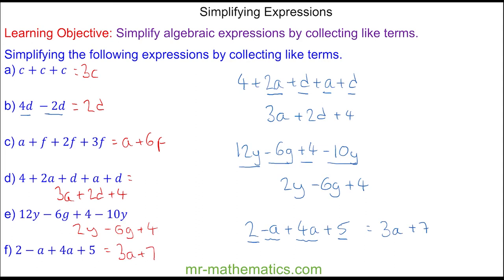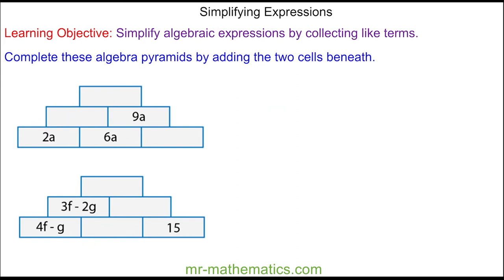Let's try two more questions. Here we have two algebra pyramids where the cell on top is made by adding the two beneath. Do you want to try and complete these pyramids yourself by pausing the video? We'll begin by working out this cell where we have 2a plus 6a, which is 8a. This cell is 6a plus something to make 9a, so we need three more a's. The cell on top is the sum of 8a plus 9a, which is 17a.